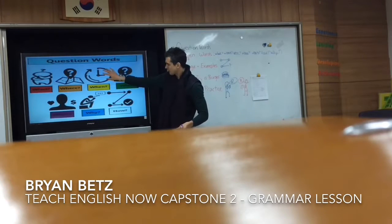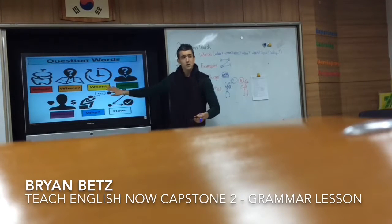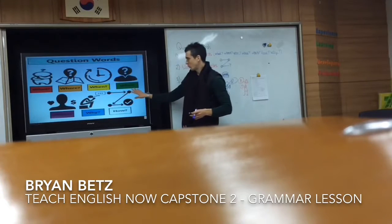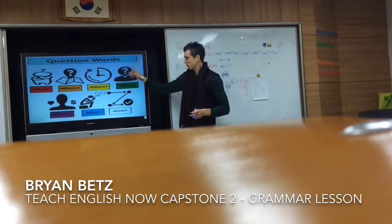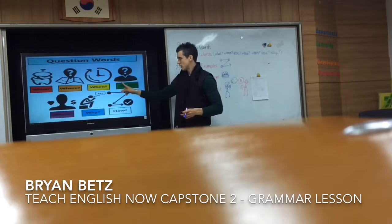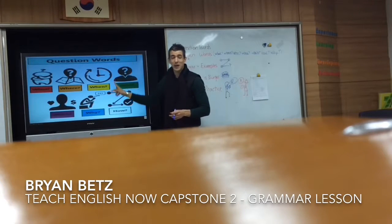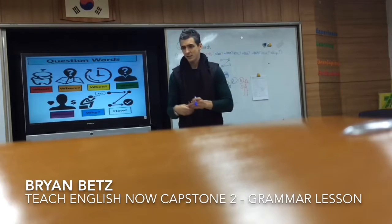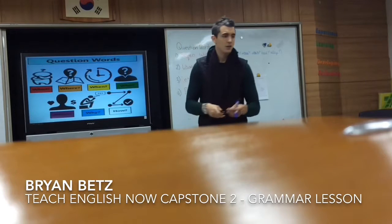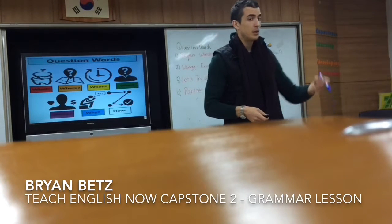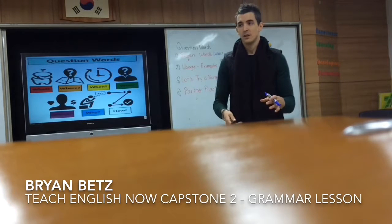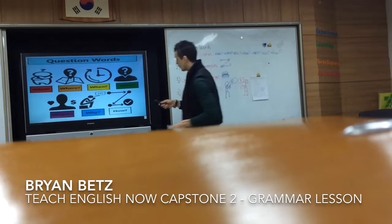Here's a clock — 'when' asks about time. 'Who' — what is this? It's a person. 'Who' asks about people: family, friends, teachers, students, police officers, firefighters, doctors — people in your life. Who.